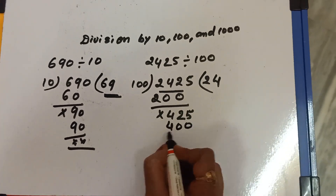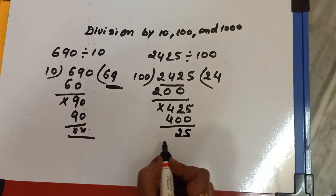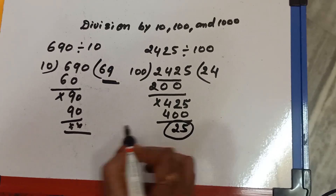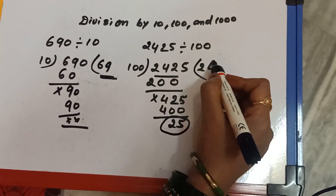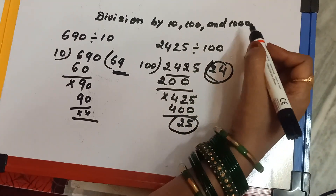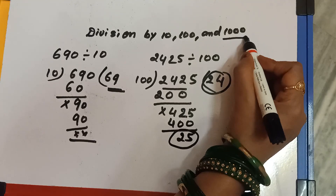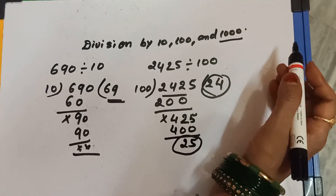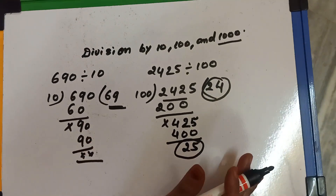After that, 5 comes down, so we divide 25 by 100. In this question, the remainder is 25 and the quotient is 24. Division by 1000 is the same as for 10 and 100.